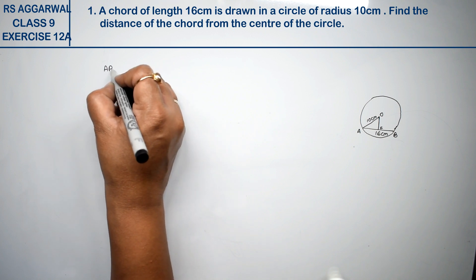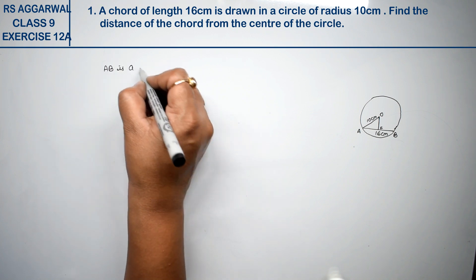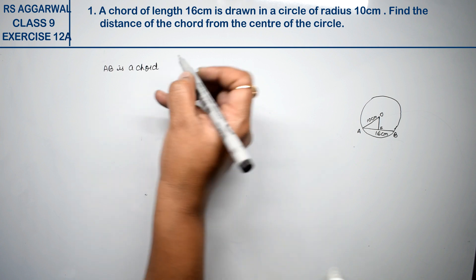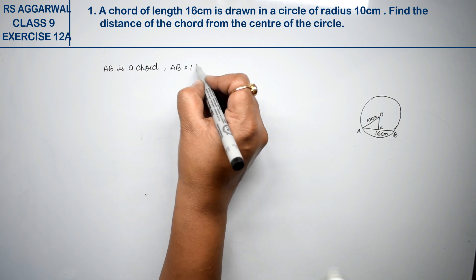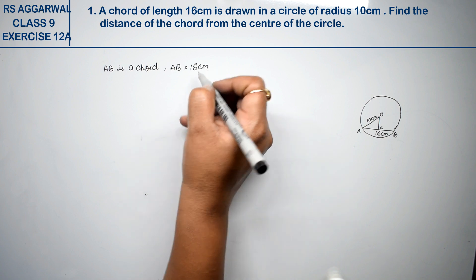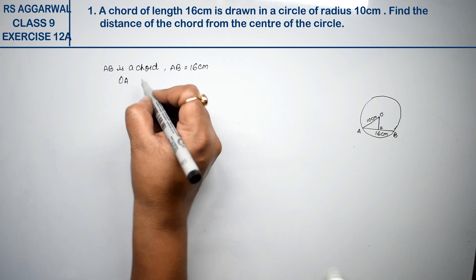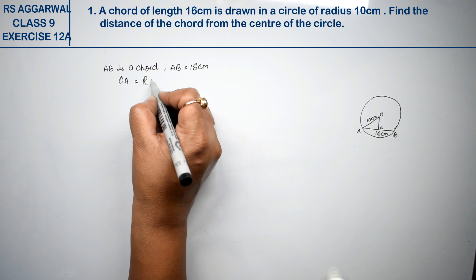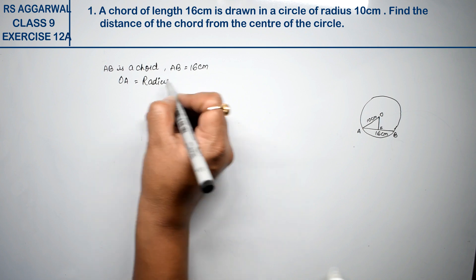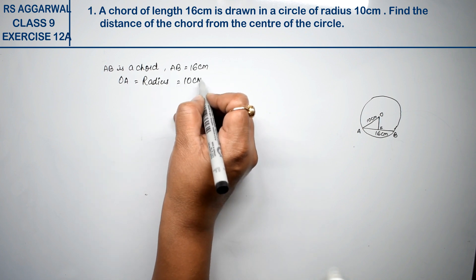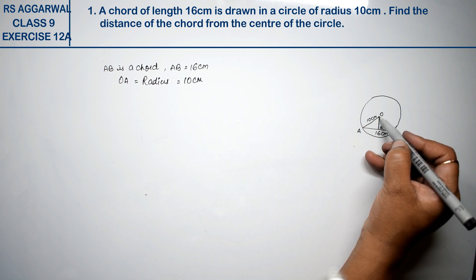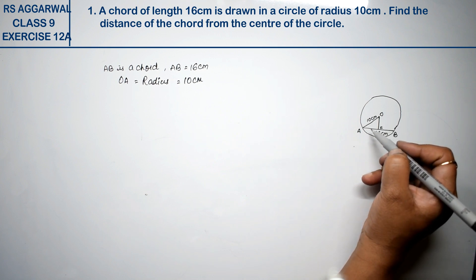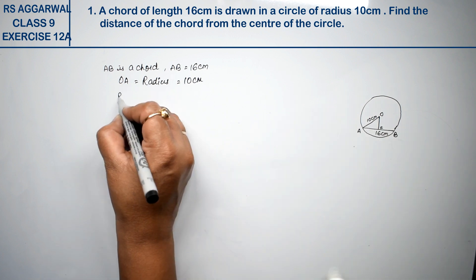We know AB is a chord where AB is equal to 16 centimeters, and O is the center with radius 10 centimeters. Now we know that the perpendicular drawn from the center of the circle bisects the chord.